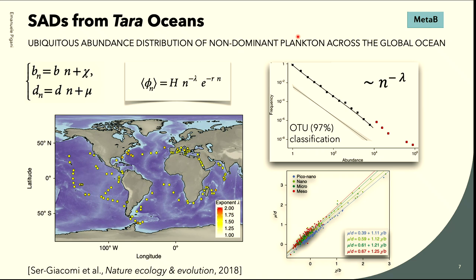In the first part I will talk about some taxonomic results, focusing on the metabarcoding in Tara. The first work that focused on the species-abundance distribution is a work by Enrico Sergiacomi, in which they analyzed different sizes of planktons from the pico to the mesoscale, and found that the distribution is very similar all across the ocean. Despite the differences between polar and tropical regions, the species-abundance distribution is very similar. They propose a model in the spirit of neutral theory — just birth, death, and immigration terms — from which you can derive a theoretical species-abundance distribution, which is simply a power law with an exponential cutoff.